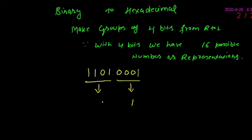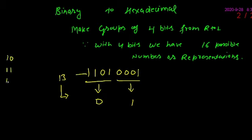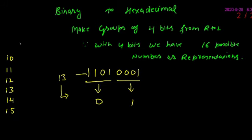Again converting groups to their decimal equivalent. First group की value होगी 1, second group की value बनेगी 13, तो उसका hexadecimal equivalent लिखना है — वो होगा D. यह आपको पता होना चाहिए कि 10 to 15 जो decimal numbers हैं उनके hexadecimal equivalents: 10 का A, 11 का B, 12 का C, 13 का D, 14 का E, 15 का F.